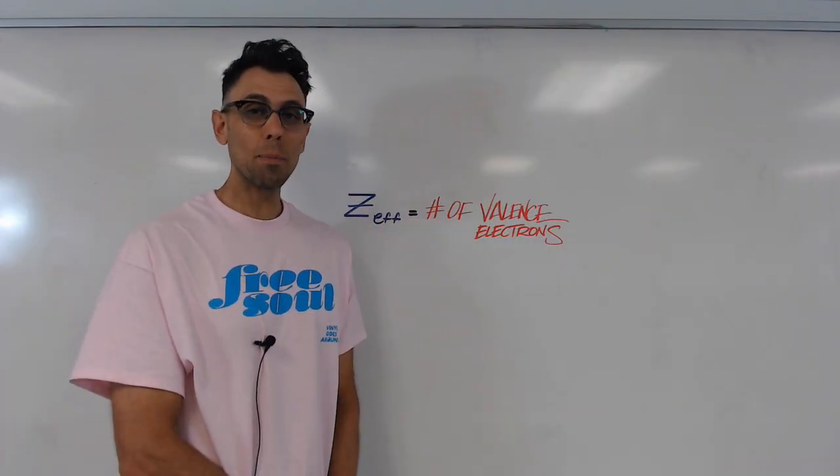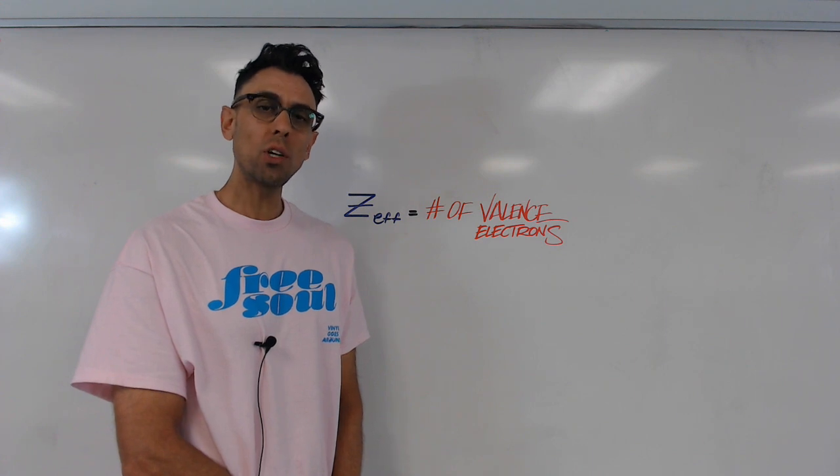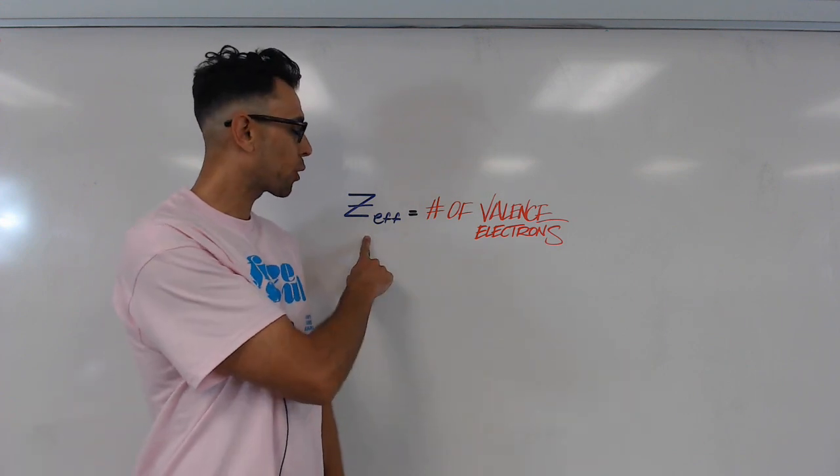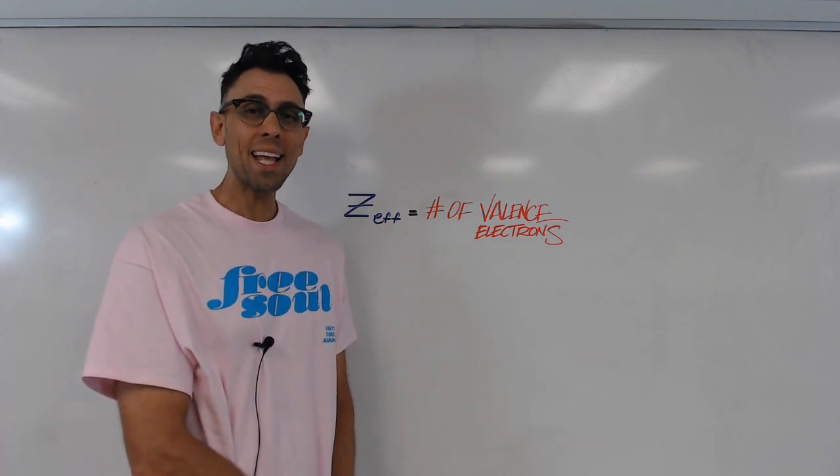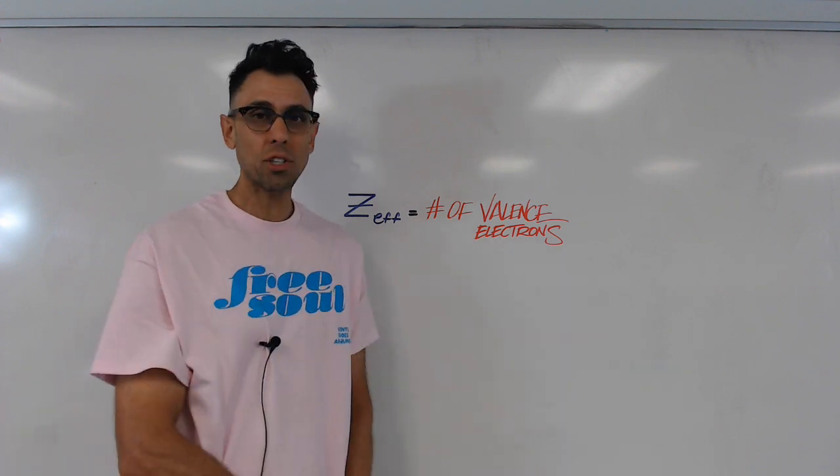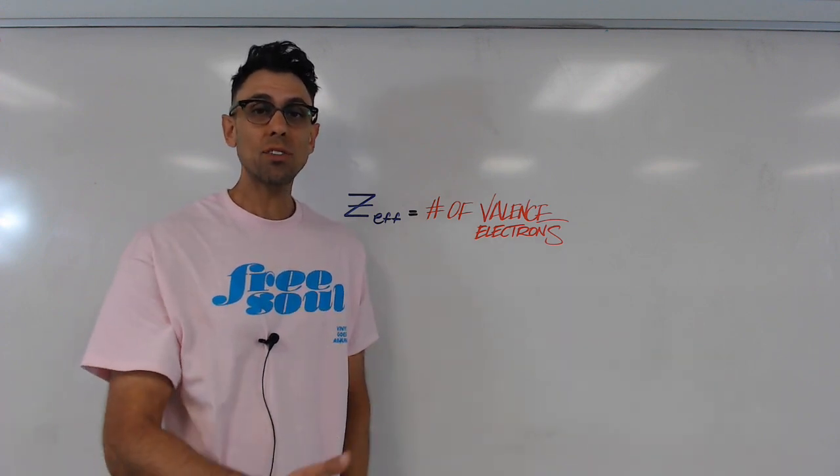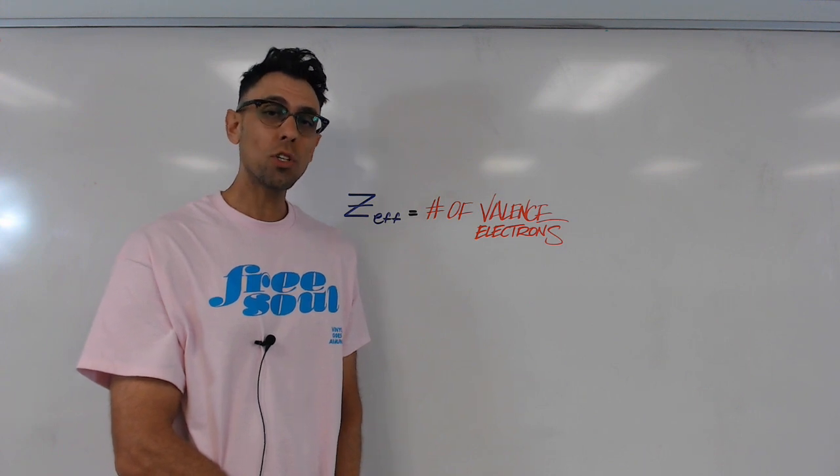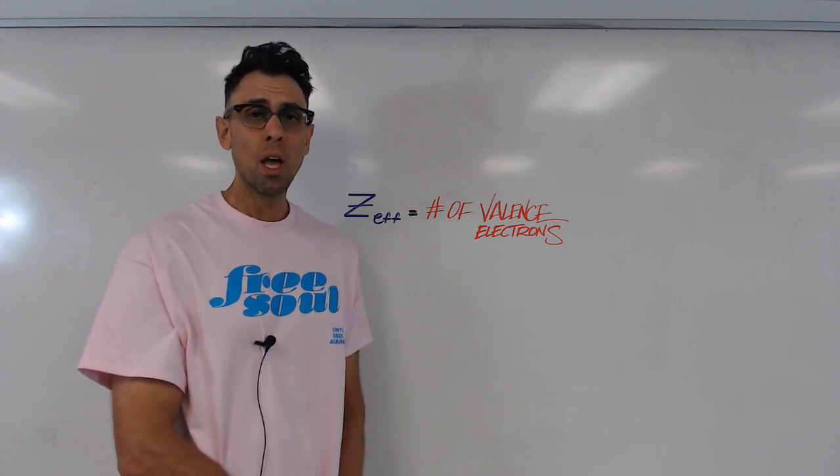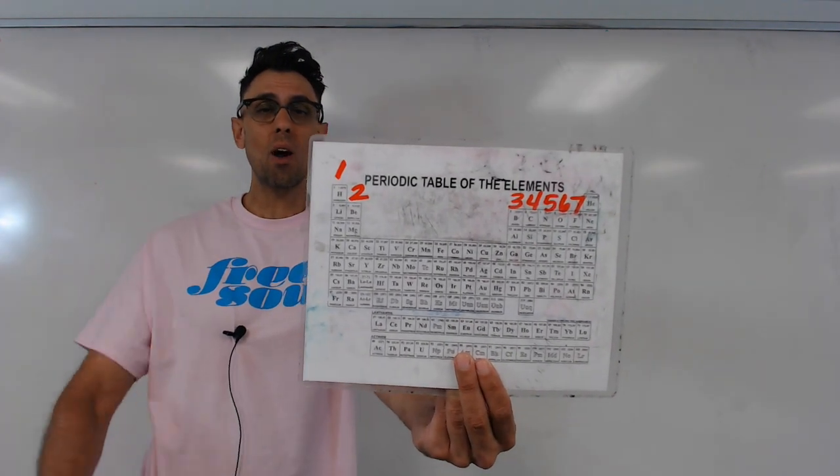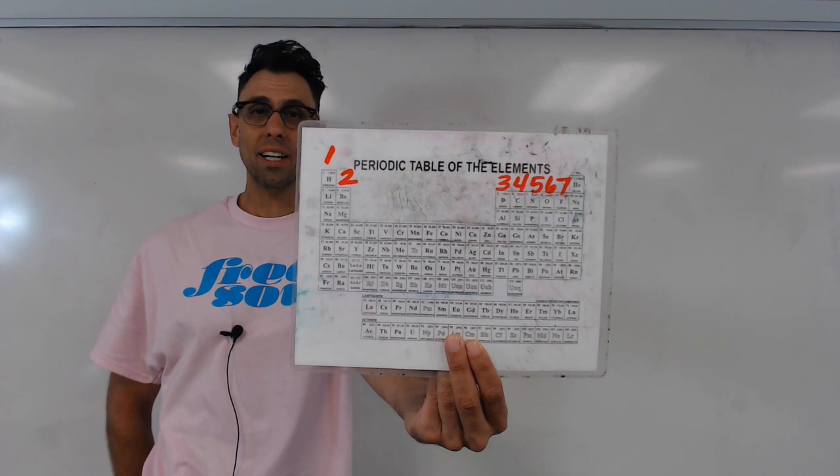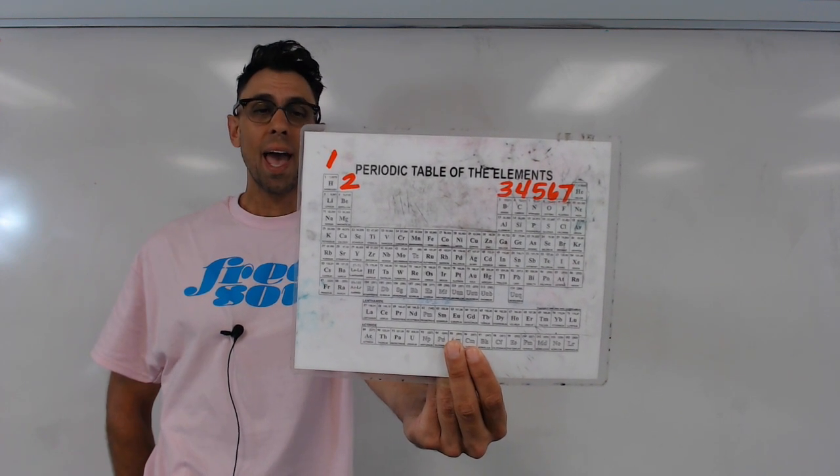After completing many problems on effective nuclear charge, one notices that a pattern emerges. It turns out that the Z-eff, or effective nuclear charge for any element, tends to be approximately equal to its number of valence electrons. So this is a nice shortcut, or quick way to get an answer to a question asking you what the Z-eff of a particular element is. So we can take our periodic table, and as you can see here, I've labeled in red across the top the number of valence electrons for the major groups. And if I was asked, for example,